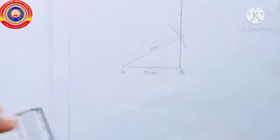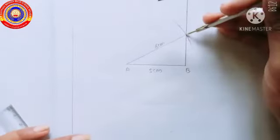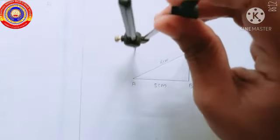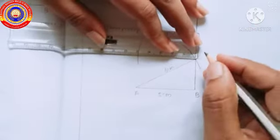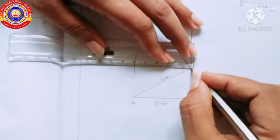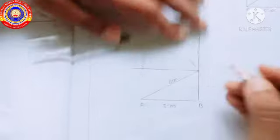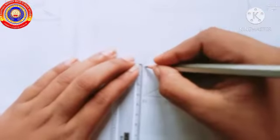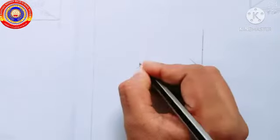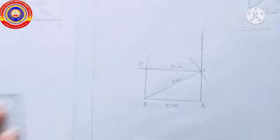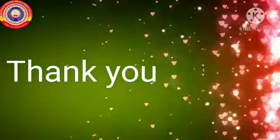Then measure 5 centimeters and place the compass at point C and draw an arc, then join the points such that CD equals 5 centimeters. Draw the line AD as well. We now have the required rectangle with one side 5 centimeters and diagonal 6 centimeters. In the next class we will discuss more questions related to rectangles. That's all for today, thank you.